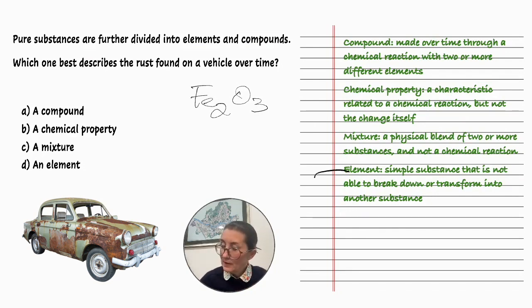An element. An element is a simple substance that is not able to break down or transform into another substance. So that is not it. What is a mixture? It is a physical blend of two or more substances and not a chemical reaction. So that is not it.